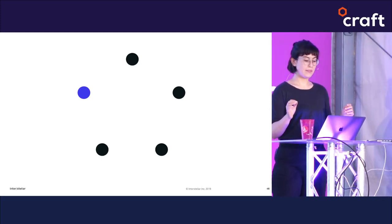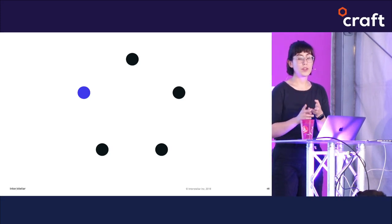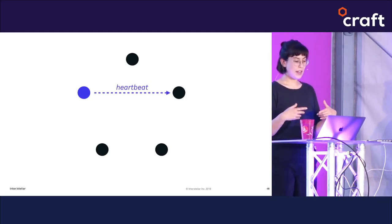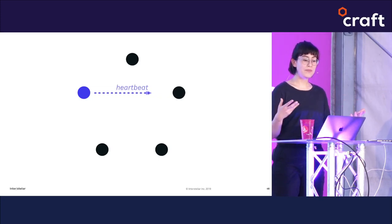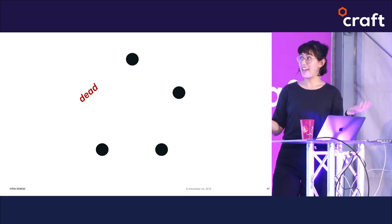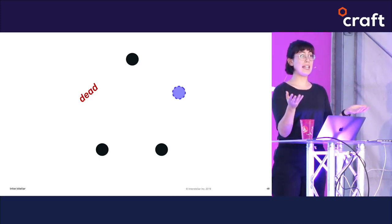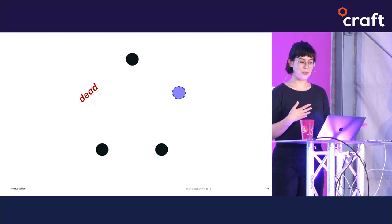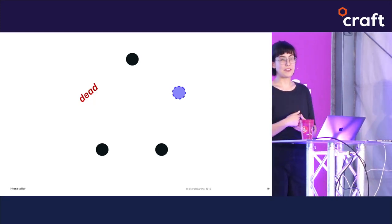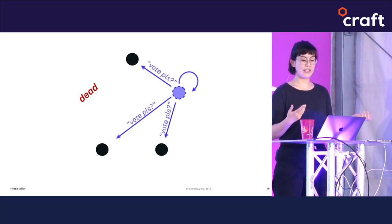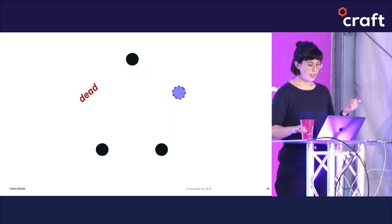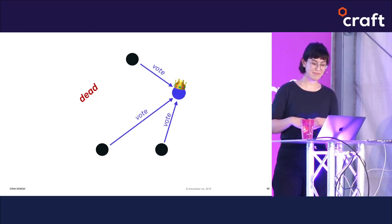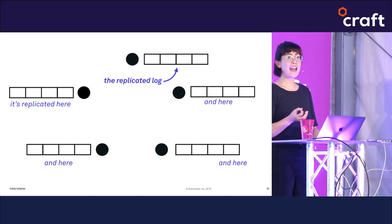Every node can be in one of three states: follower, candidate, or leader. When a node joins the network it starts as a follower and expects to hear a heartbeat from the leader. If it doesn't hear a heartbeat after a while, it assumes the leader is dead, announces its own candidacy, and transitions into candidate mode. It begins by voting for itself, then sends requests to every other node for their vote. If it receives votes from a majority, it becomes the new leader.